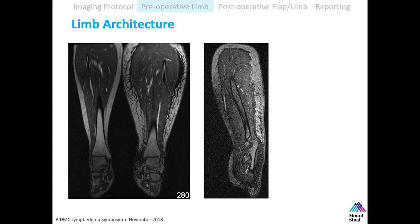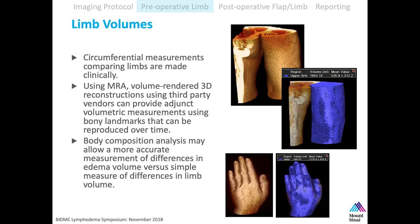Here's an example of limb architecture. On the left is a lower extremity, on the right is an affected upper extremity. This is a T1-weighted sequence so fat is bright. You can see dark lines scattered throughout the fat — on the affected larger leg, that's fluid. Because this is a 3D volume acquisition, we're able to highlight a region of interest and get a total arm volume — hand, upper arm, or forearm — though imaging arms in sections does add time.